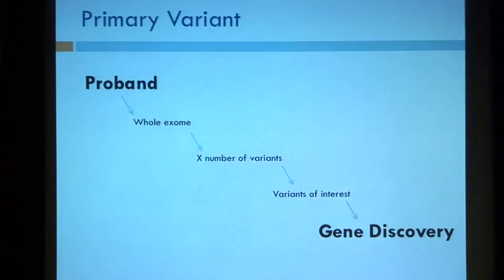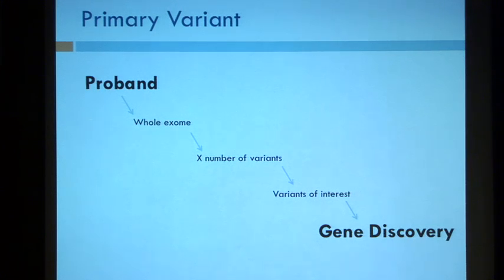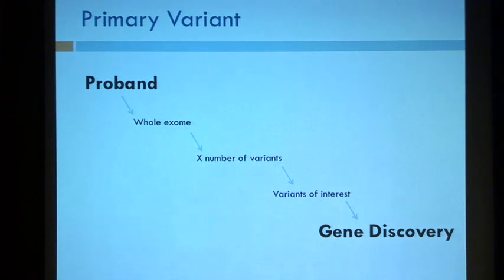What we've been talking about for the most part today is primary variants, and primary variants are the reason most of you are doing this research. It is the one or two variants that are responsible for the disease in your probands. We're taking probands with really interesting diseases, doing whole exomes or whole genomes, ending up with tens or hundreds of thousands of variants, usually getting a handful of variants of interest — maybe up to 100 — and then we hope to have a gene discovery, a really cool paper, maybe some functional studies.